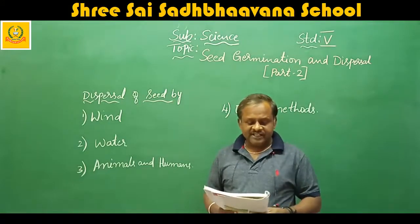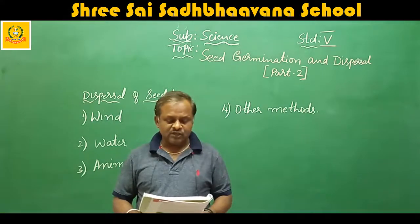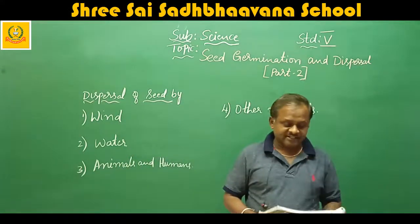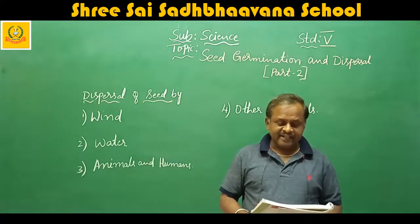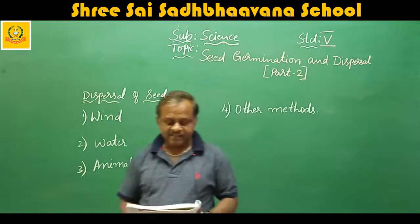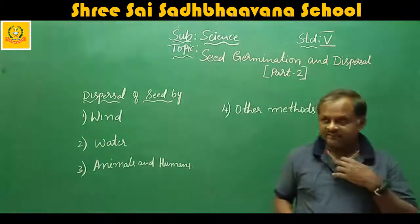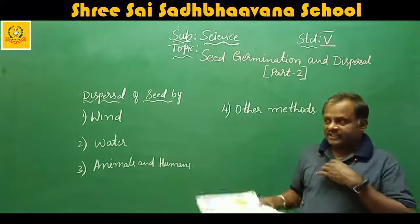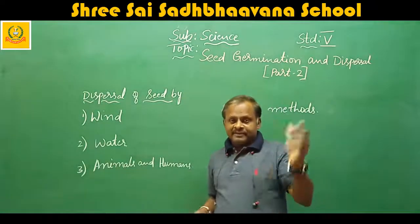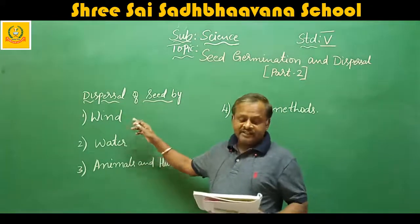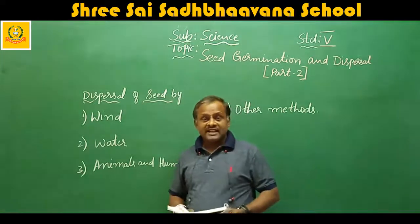Dispersal of seed by wind. In order to be carried by the wind, seeds to be dispersed must be light and small so that they may be carried over large distances. They have hair or wings to help them get carried away by the wind. The seeds of hyptage, dandelion, and cotton have tufts of hair. Sycamore seeds are winged — they spin through the air like mini helicopters. The wind takes away all lightweight materials, helping plants disperse their seeds.